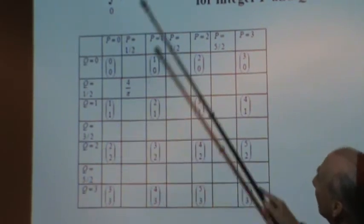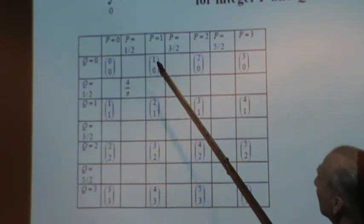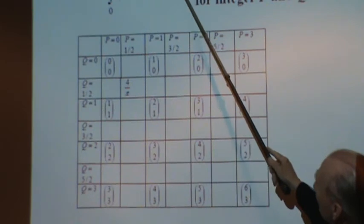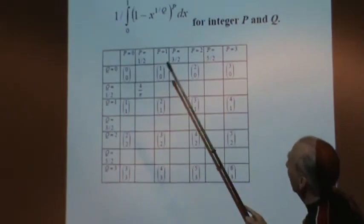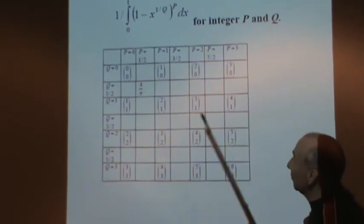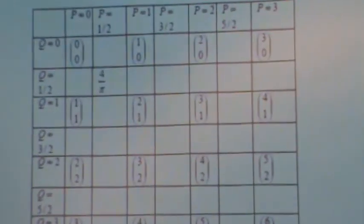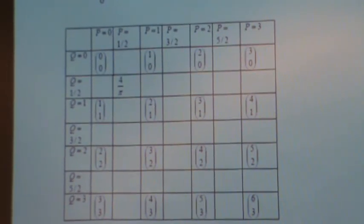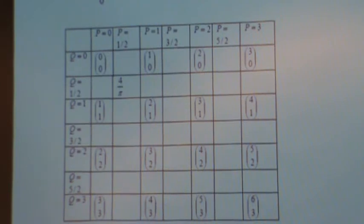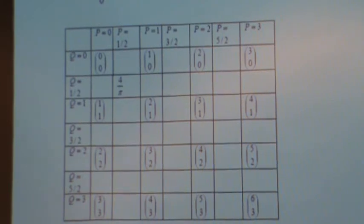So, the first thing he does is he evaluates the integrals for p is a whole number and q is a whole number. And what he gets are binomial coefficients. Now, I've written them down in here, in binomial coefficient notation, but, of course, he would do that. He would have numbers in there. No doubt, he recognized them as binomial coefficients. I can't imagine he wouldn't have done that because he's a very good mathematician.